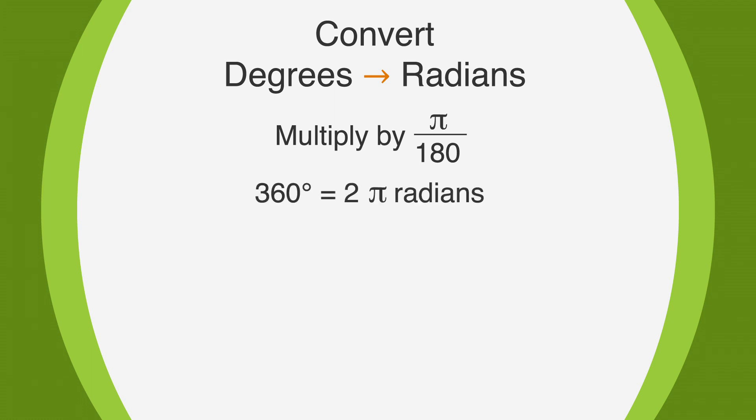We know that 360 degrees equals 2 pi radians, but let's see how it works out with this conversion formula. 360 times pi over 180. That's 360 pi over 180. 180 goes into 360 twice, so we're left with 2 pi. The conversion worked!